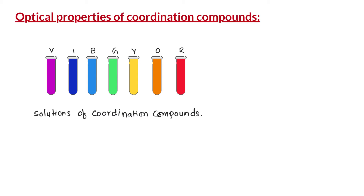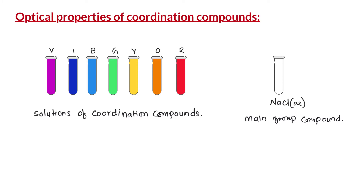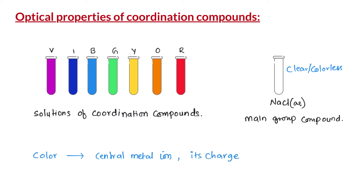In the previous video, we learned that one of the important characteristics of coordination compounds is that they are highly colorful and can form a wide range of colors in the entire visible spectrum, starting from violet to red. In contrast, most compounds of main group elements are colorless or clear solutions, for example a sodium chloride solution. In this video, we use crystal field theory to explain why coordination compounds are colorful and why the color depends on the central metal ion, its charge, and the ligand.